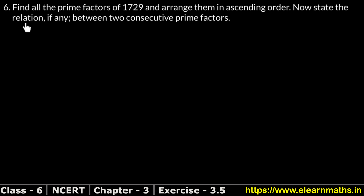Let's do question number 6 of exercise 3.5, that is playing with numbers. Question number 6 is: find all the prime factors of 1729. We have to find the prime factors of 1729 and arrange them in ascending order.